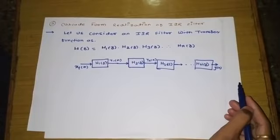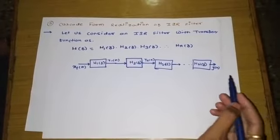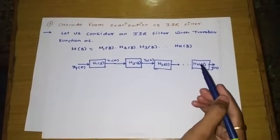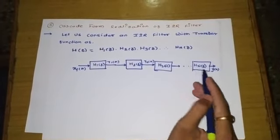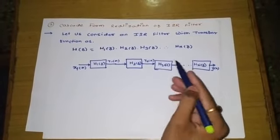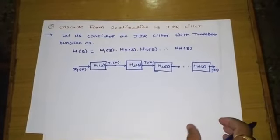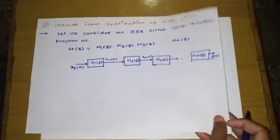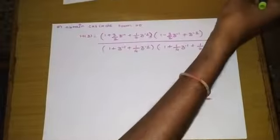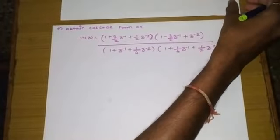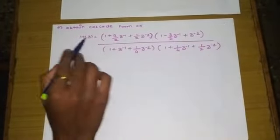To realize this for an IIR filter, we use direct form 2 realization for each subsystem, which are then connected in series. Let us take one example on this.